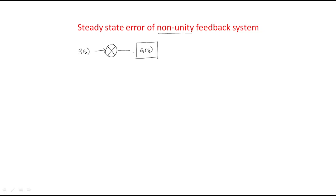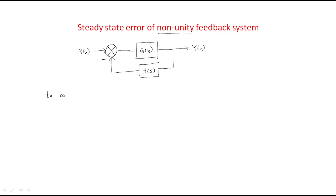The output is Y(s), and it has a non-unity feedback with gain H(s). For this type of system, to calculate the steady-state error, two conditions are mandatory.